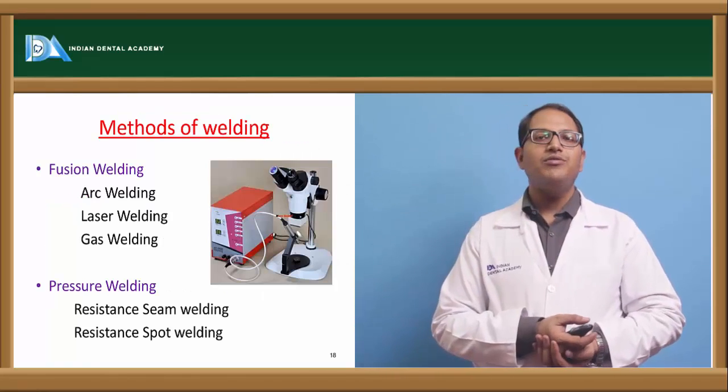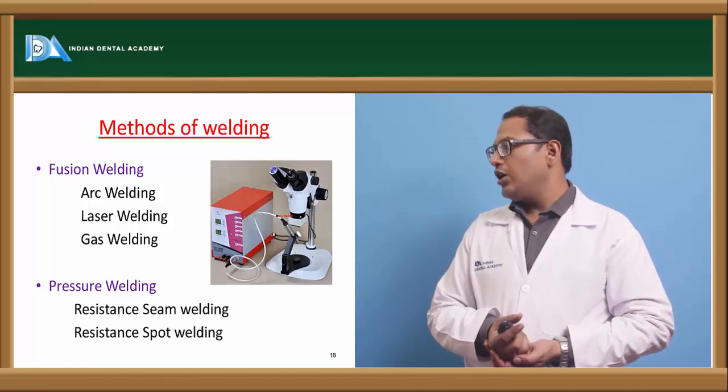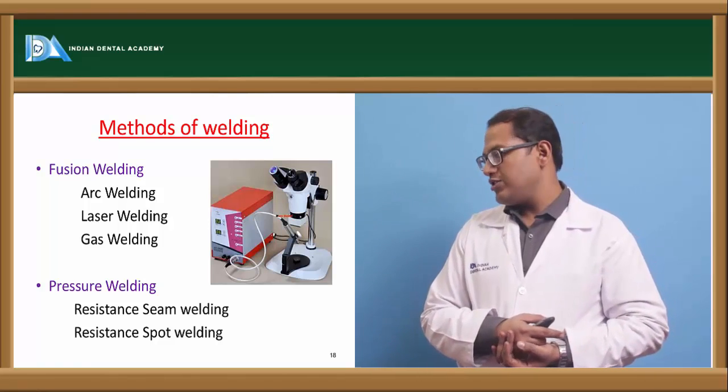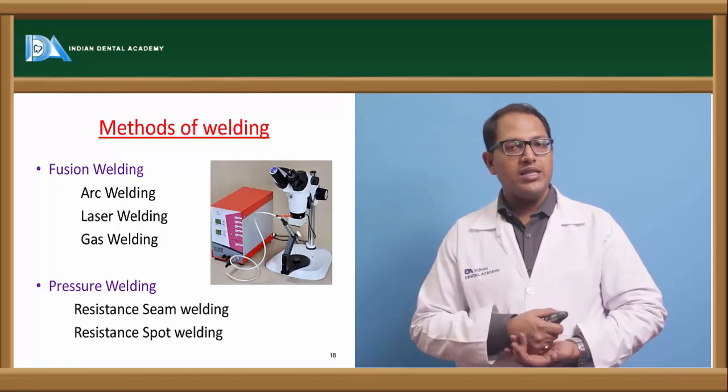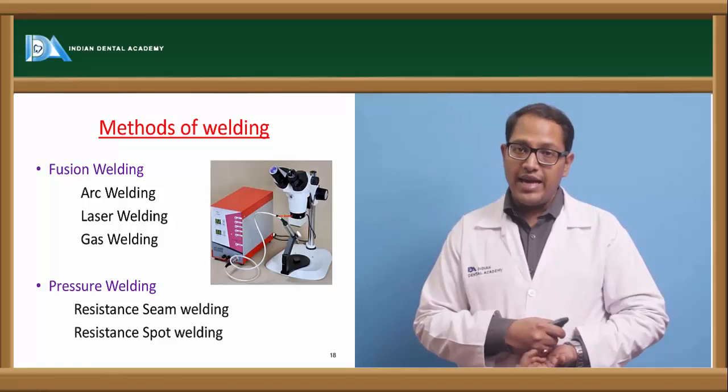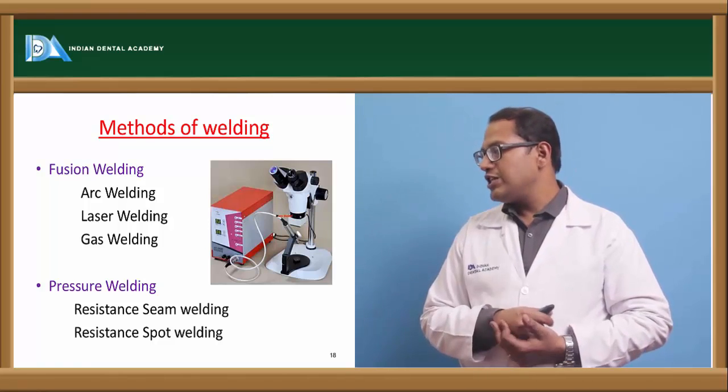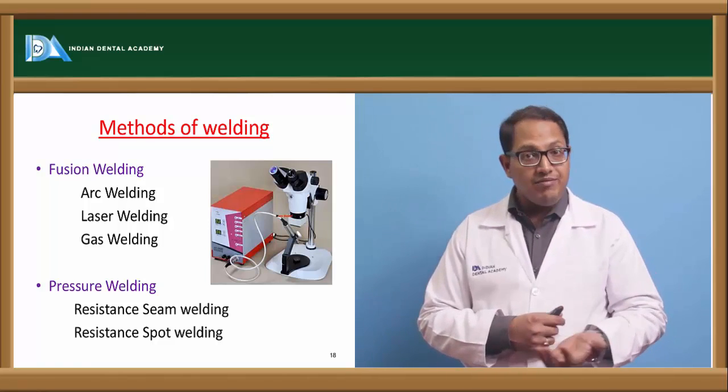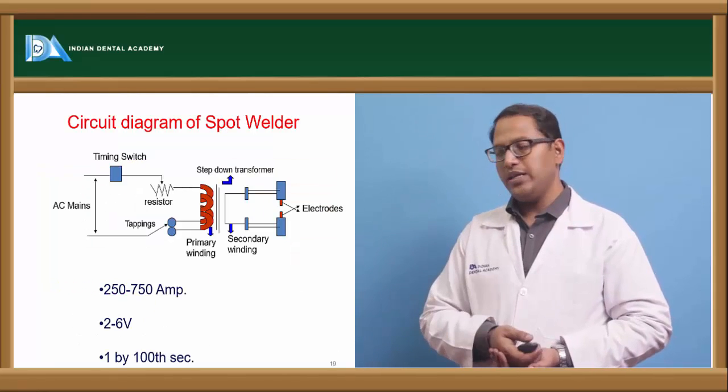Now the methods of welding can be fusion welding or it can also be called pressure welding. So the fusion welding, what are the types? We have arc welding, laser, and gas welding. For pressure welding, we have resistance seam welding and we do have resistance spot welding.